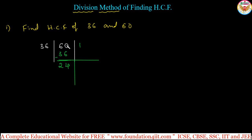The first step is to take the larger number and divide by the smaller number — 36 goes once. For the next step, the previous divisor becomes the new dividend. So this 36 should be written here, and now we divide 36 by 24.